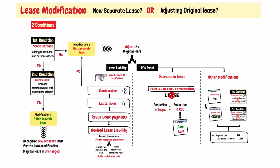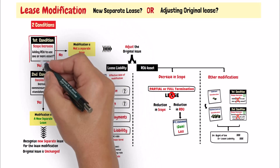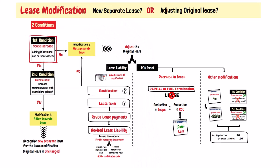The first condition: does the modification increase the scope of the lease by adding a right to use one or more additional assets? The answer is yes. The modification increases the scope by adding the right to use 5 additional vehicles. So the first condition is met.